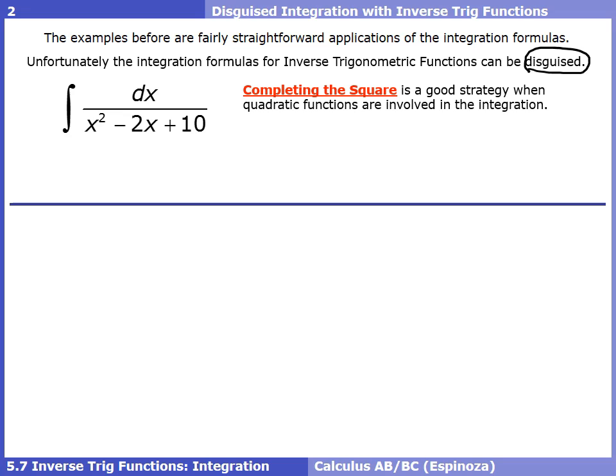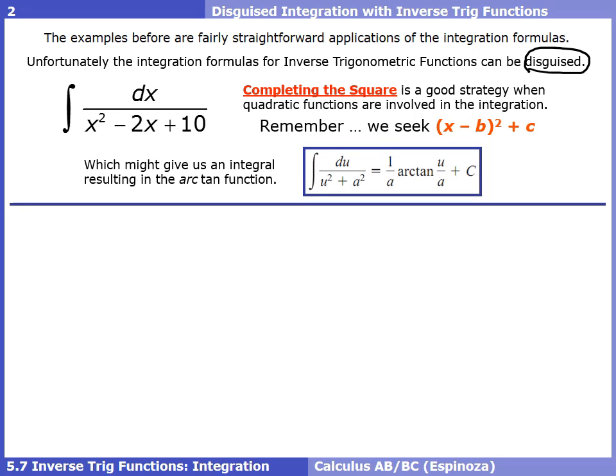Completing the square is a good strategy when we have quadratic trinomials in the bottom of a fraction. What we're trying to do is write something in the form (x plus or minus a number) all squared plus another number, because that would look like our formula for arctan. The problem we're going to attempt is the integral of dx over x squared minus 2x plus 10.